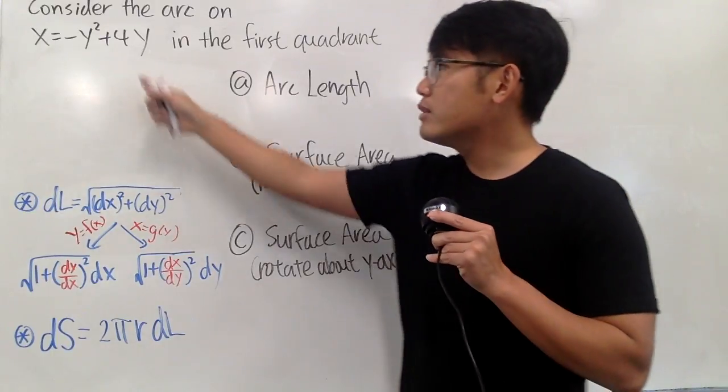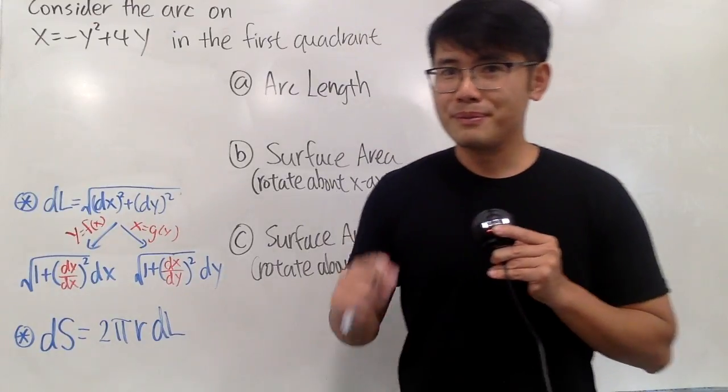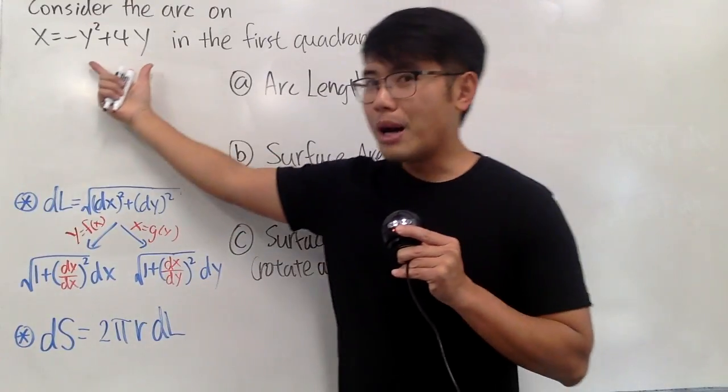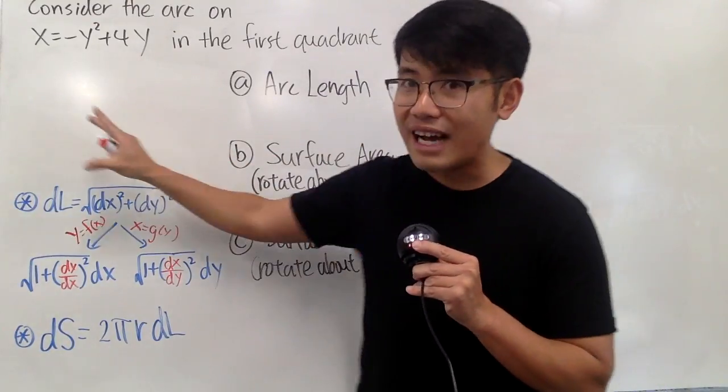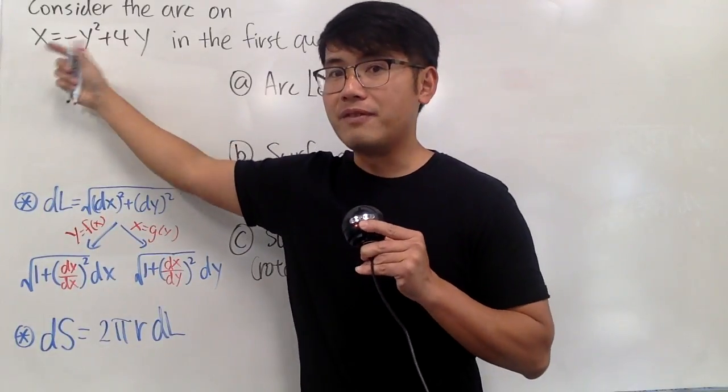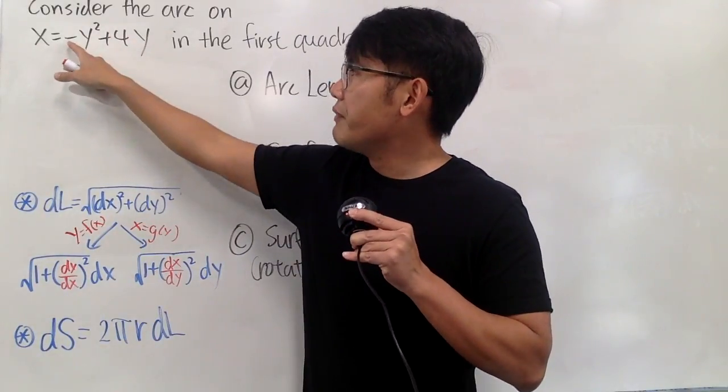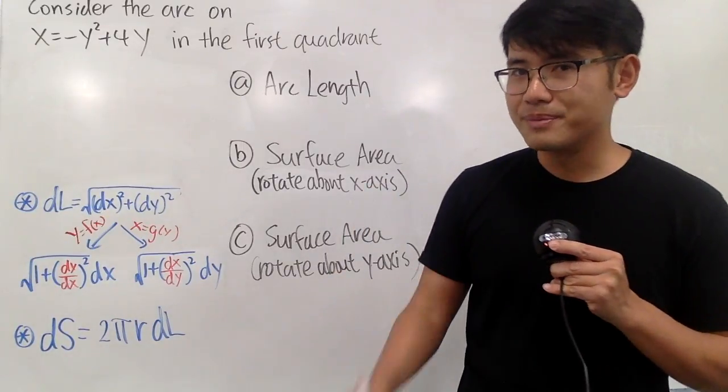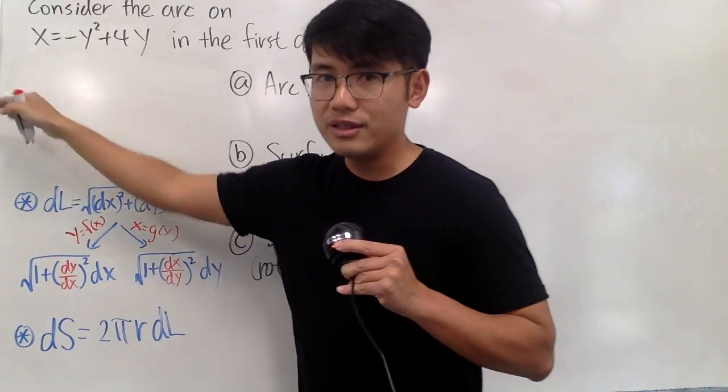First question, how does the graph of this look like? Yes, it's just a parabola, right, and open to the left, because you have x being a function of y, and we have negative 1 as the coefficient of y squared. So, we know the graph looks like this.